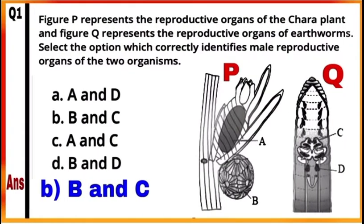Question 1: Figure P represents the reproductive organs of the Chara plant and Figure Q represents the reproductive organs of earthworm. Select the option which correctly identifies the male reproductive organs of the two organisms. In Figure P, A and B are Oogonium and Antheridium of Chara plant. In Figure Q, C and D are testes and ovaries of earthworm. So the male reproductive parts of P and Q are B of Chara and C of earthworm. Mark B and C as the correct answer.